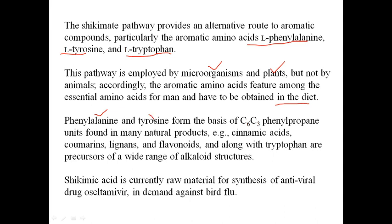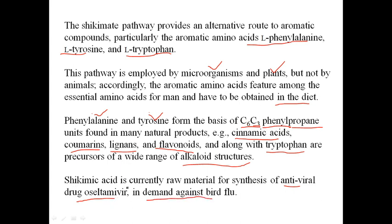Of the three aromatic amino acids, phenylalanine and tyrosine form the basis of C6-C3 phenylpropane units — C6 stands for phenyl and C3 stands for propane. This C6-C3 phenylpropane unit is found in cinnamic acids, coumarins, lignans, and flavonoids. Tryptophan is especially found in alkaloid structures. One more significance of this pathway is that shikimic acid is currently the raw material for synthesis of the antiviral drug oseltamivir.